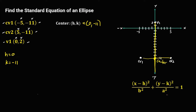To solve for a, a is the distance from center to vertex. Using the counting method — starting counting on the next point from the center to the vertex — we count 1, 2, 3, 4, 5, 6, 7, 8, 9, 10, 11, 12, 13. So a is equal to 13.